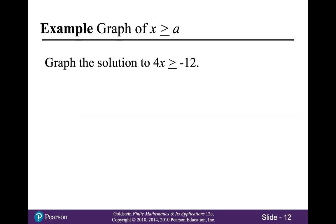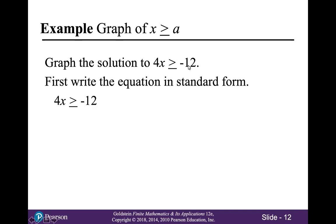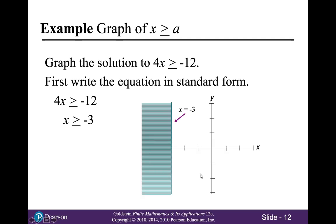Let's graph the solution to 4x is greater than or equal to negative 12. We'll start by putting that in standard form. Dividing both sides by 4, you get x is greater than or equal to negative 3. So let me talk about this graph. You're going to start by drawing the line x equals negative 3, which is a vertical line passing through the point negative 3, 0.